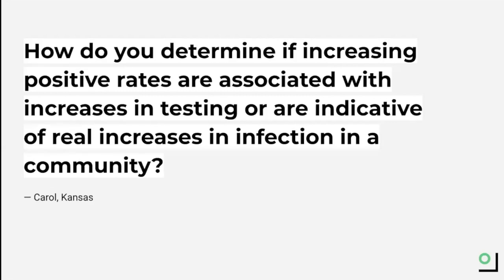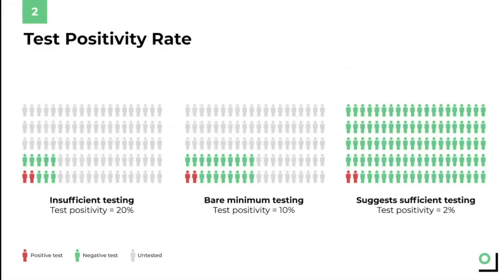Let me illustrate this for you. In the slide, there are three different scenarios. Every icon has a color — red or green — and represents a person who is tested for COVID. Red means the test was positive and that person is infected. Green means the test was negative and the person is not. In the first scenario, you can see a total of ten colored icons: two which tested positive and eight which tested negative. That means the test positivity rate was two out of ten, or twenty percent.